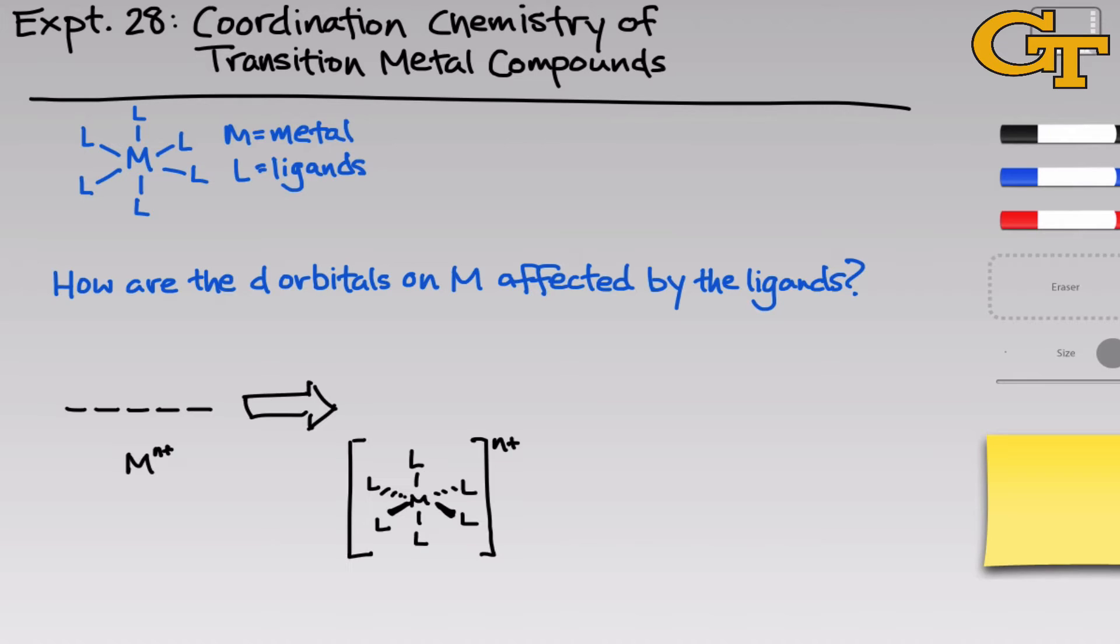So if we think about just an isolated bare metal ion, which I've written here as M^n+, it's going to have five valence d orbitals. And I've left out electrons to keep things simple, but of course in most ions these orbitals will be occupied with electrons.